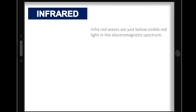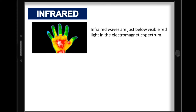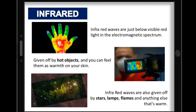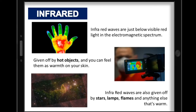Infrared waves are just below visible red light in the electromagnetic spectrum — 'infra' means below. You probably think of infrared waves as heat because they are given off by hot objects and you can feel them as warmth on your skin. Infrared waves are also given off by stars, lamps, flames, and anything else that's warm, including you.